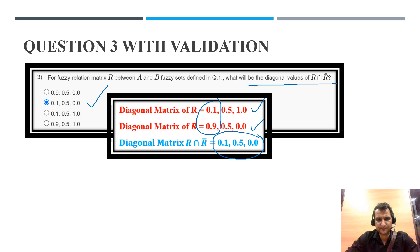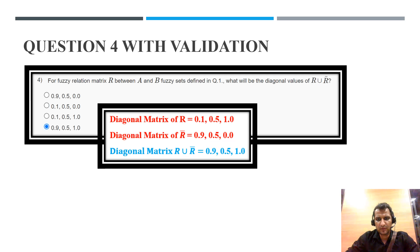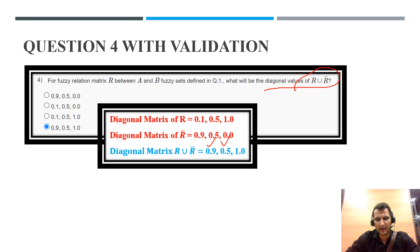Question 4: find the diagonal values of R union R̄. We take the maximum of the two values. Maximum of 0.1 and 0.9 is 0.9; maximum of 0.5 and 0.5 is 0.5; maximum of 1 and 0 is 1. So the diagonal values are 0.9, 0.5, and 1.0.